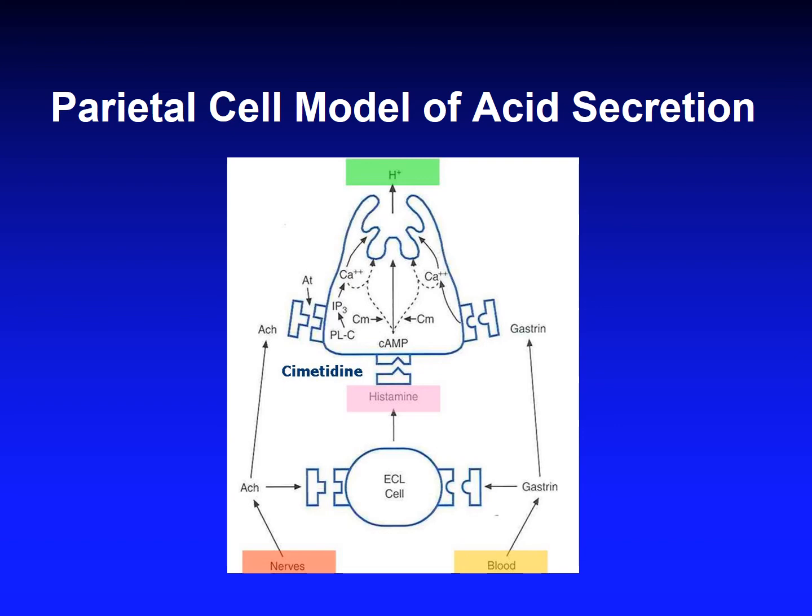The three stimuli that stimulate the parietal cell to increase hydrogen ion secretion are: gastrin, histamine, and acetylcholine. Gastrin binds to the CCK2 receptor (also called the CCKB receptor) — gastrin and CCK share that receptor. Histamine also increases hydrogen ion secretion from the parietal cell. We can block these stimuli using a CCK2 receptor blocker, or by cutting the vagus — specifically a selective branch vagotomy, not the whole vagus.